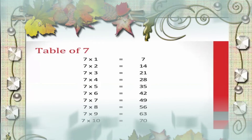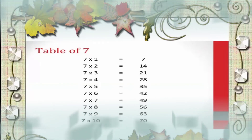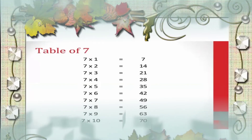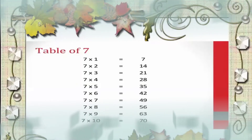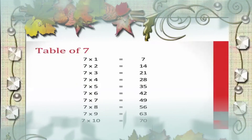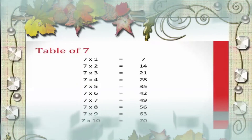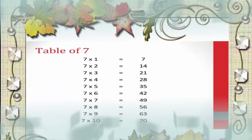Now the table of 7. Let us repeat. 7 1's are 7, 7 3's are 21, 7 4's are 28, 7 5's are 35, 7 6's are 42.